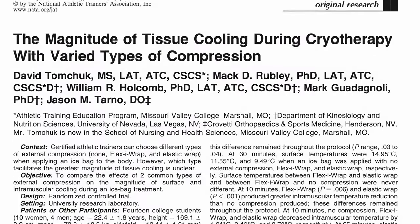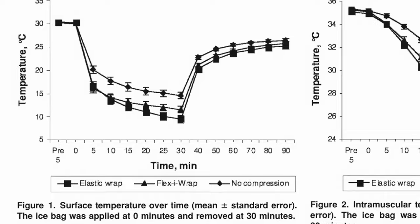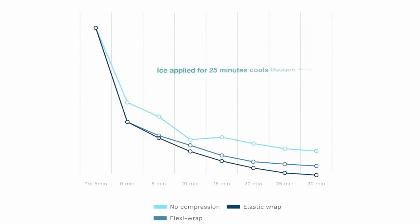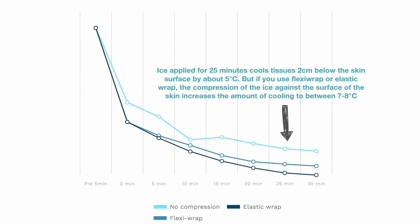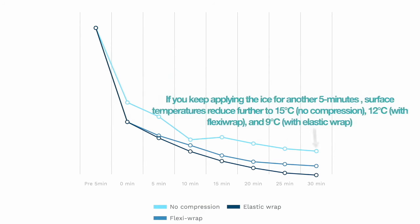One study in human subjects showed that a standard ice pack — about 1 kilogram of ice in a plastic bag applied for 25 minutes — cools tissues about 2 centimetres below the skin surface by about 5 degrees centigrade. But if you use flexi-wrap or elastic wrap, the compression increases the cooling to about 7 or 8 degrees centigrade respectively. If you continue applying the ice for another 5 minutes (30 minutes total), surface temperatures reduce further to 15, 12, and 9 degrees centigrade when applied with no external compression, flexi-wrap, and elastic wrap respectively.